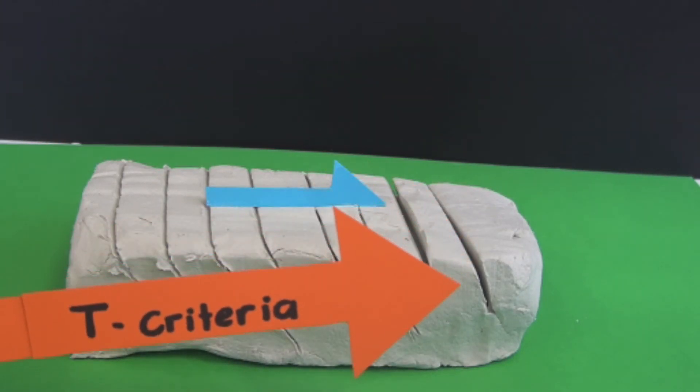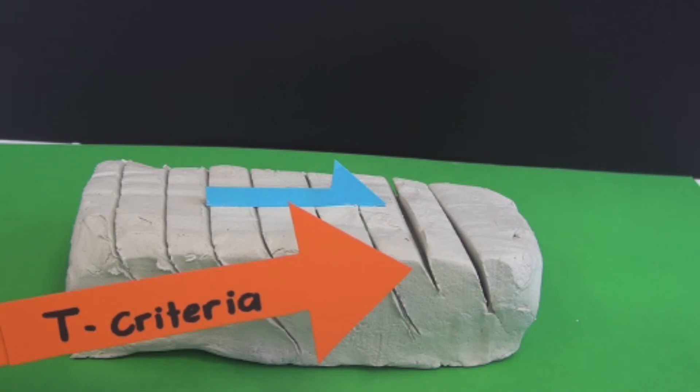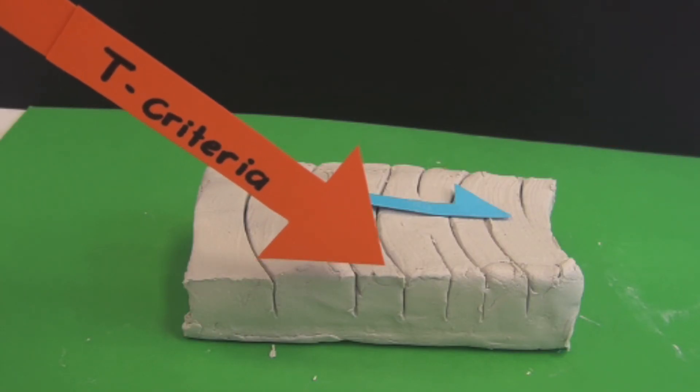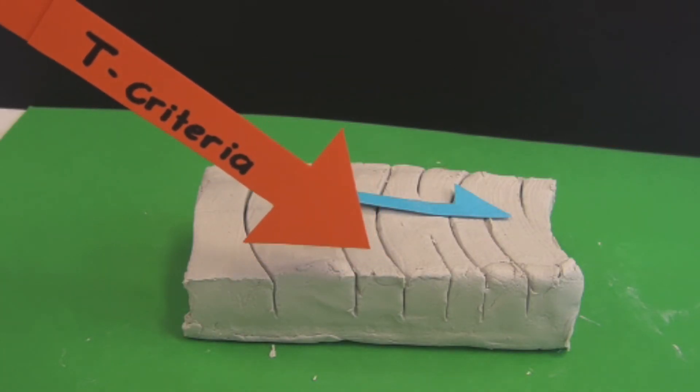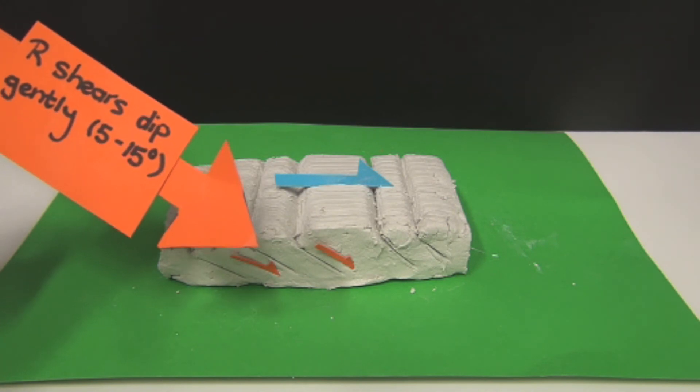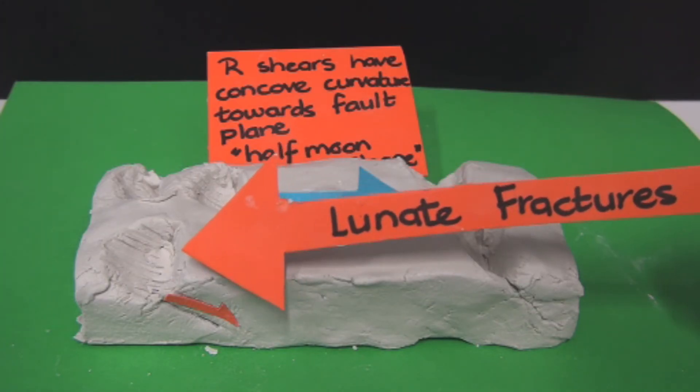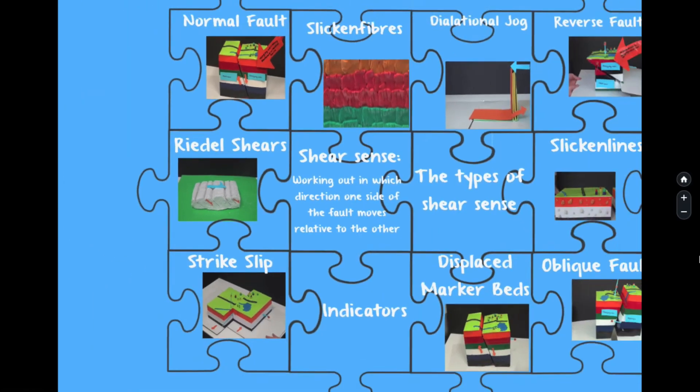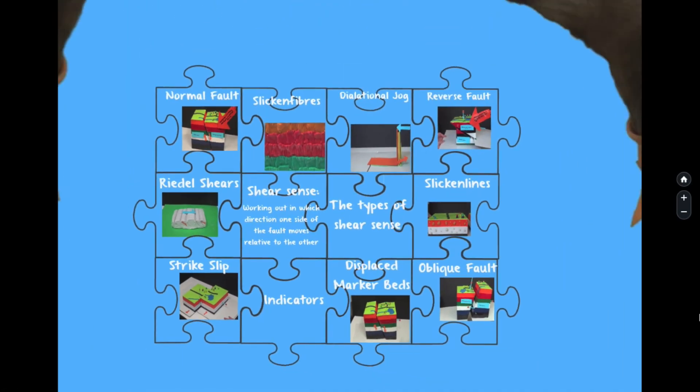T-shears would be seen as features such as these, where the blue arrow represents the sense of shear of the main fault, while we would observe Riddell shears to look somewhat like this. And that's our finished puzzle on working out shear sense in faults.